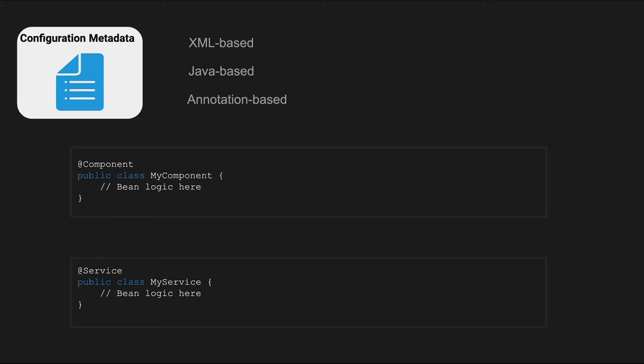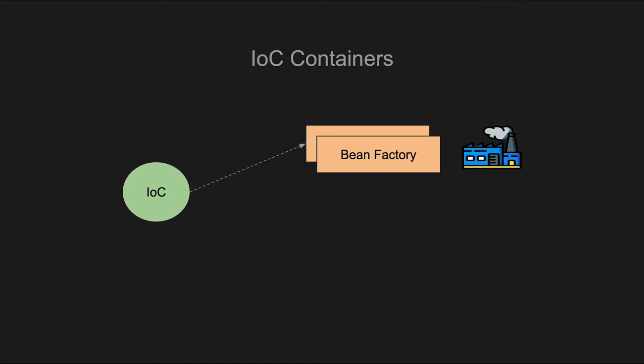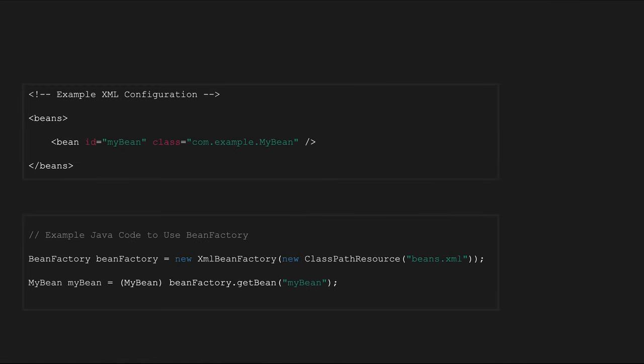This metadata informs the Spring container about how to create and manage beans. There are two types of IoC containers. BeanFactory is the simplest container in the Spring IoC hierarchy. It provides the fundamental features for managing and creating beans. It uses lazy loading, meaning it only instantiates a bean when it's requested. This can be beneficial in scenarios where resources need to be conserved and not all beans are required at application startup. It's suitable for resource-constrained environments or applications where memory usage needs to be minimized.